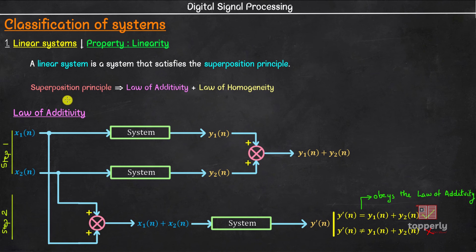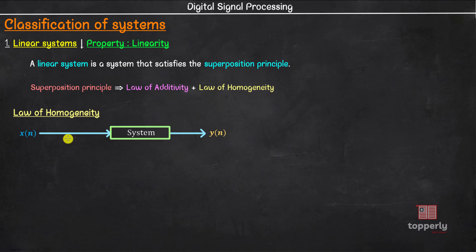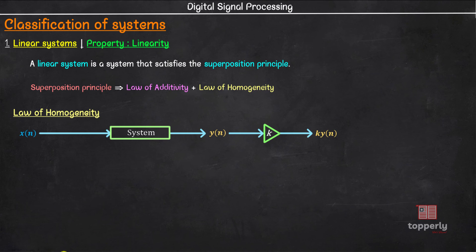Now let's see the second law in the superposition principle: the law of homogeneity. To check the principle of homogeneity we also have two steps. In the first step, we take the same system and give an input x(n) to it. The corresponding output is y(n). Now we will multiply the output with a constant k to get k times y(n). This is step 1.